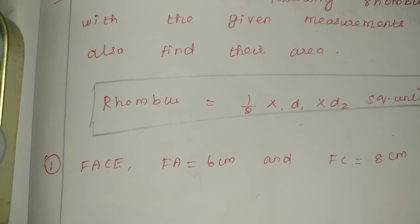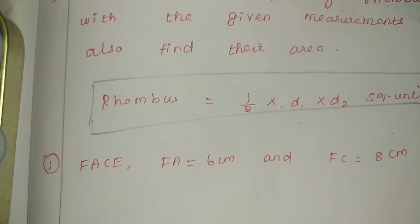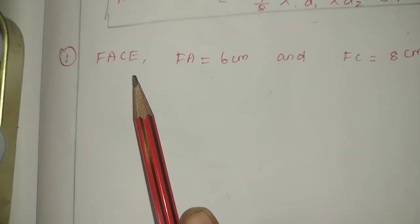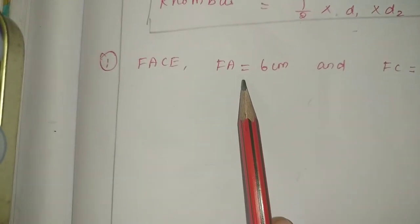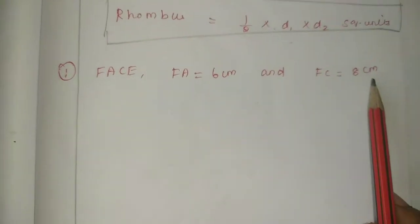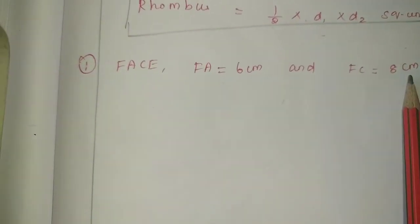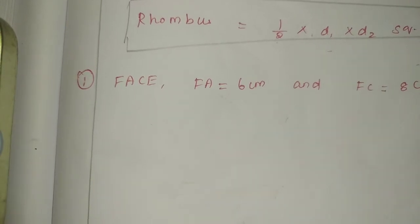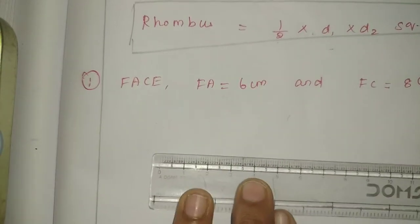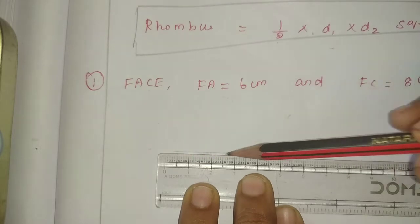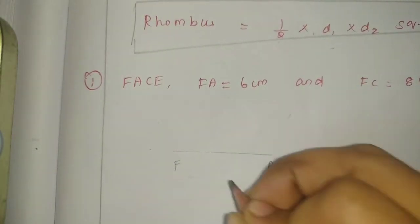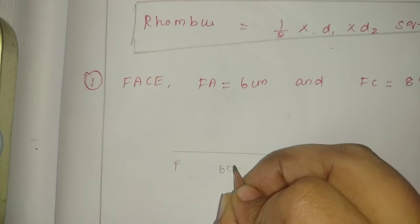All the sides of a rhombus are equal. The given measurements are: FA is equal to 6 cm. And FC — the diagonal — is equal to 8 cm. First, we will draw the diagram. FA equals 6 cm.